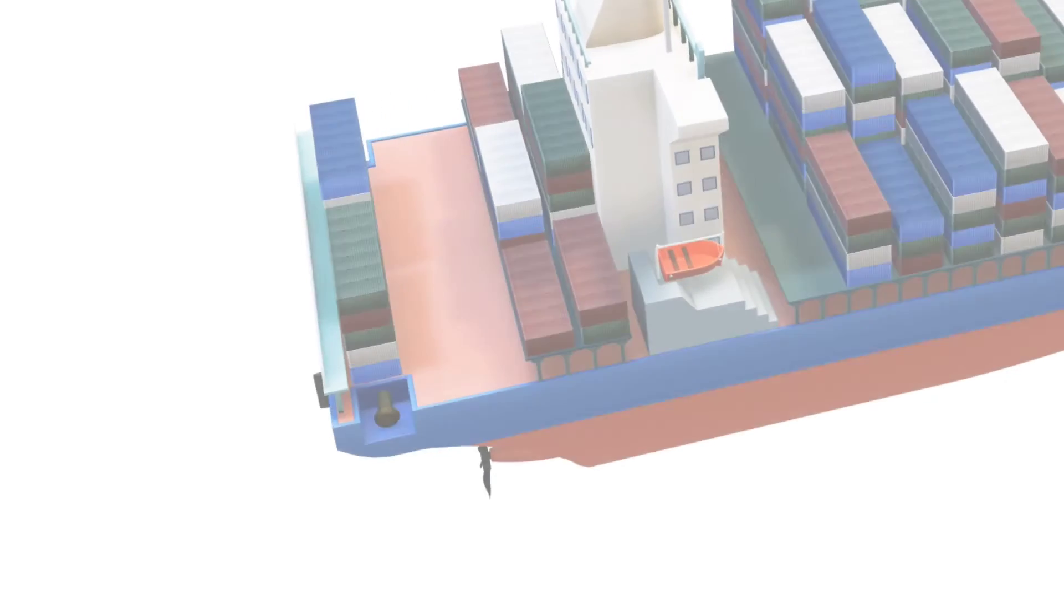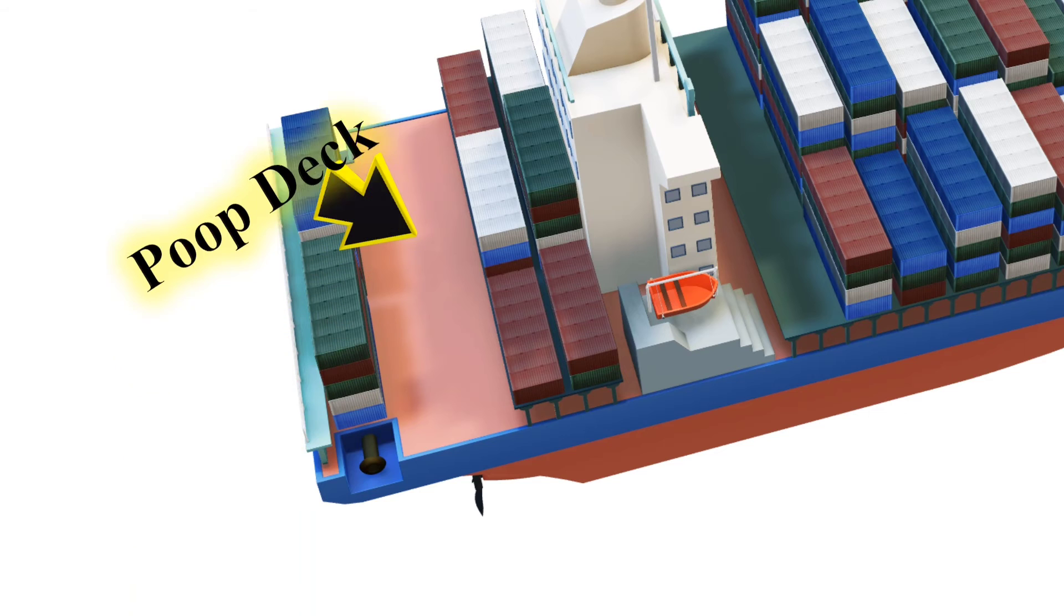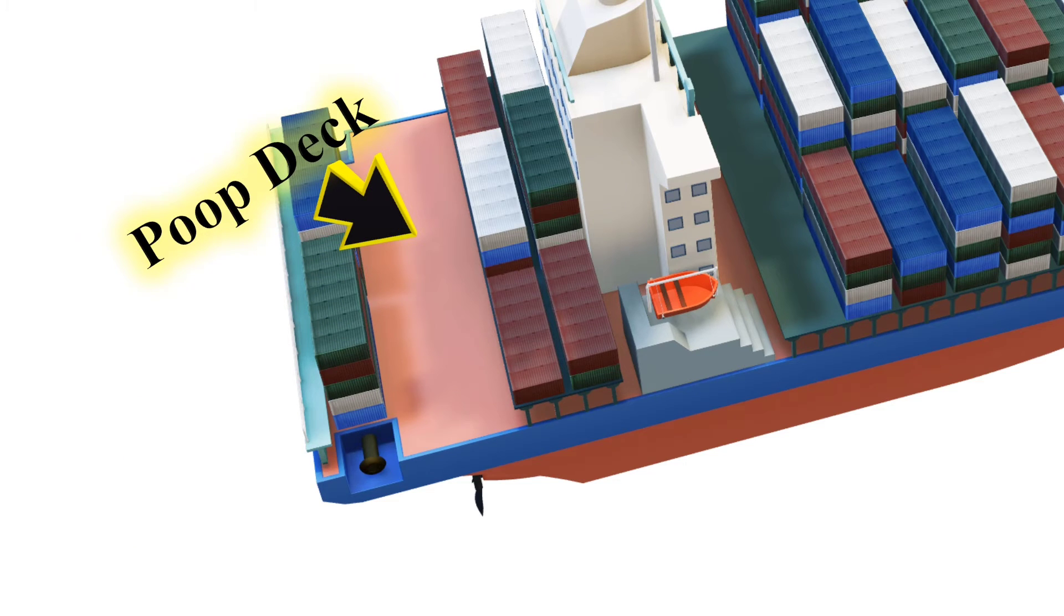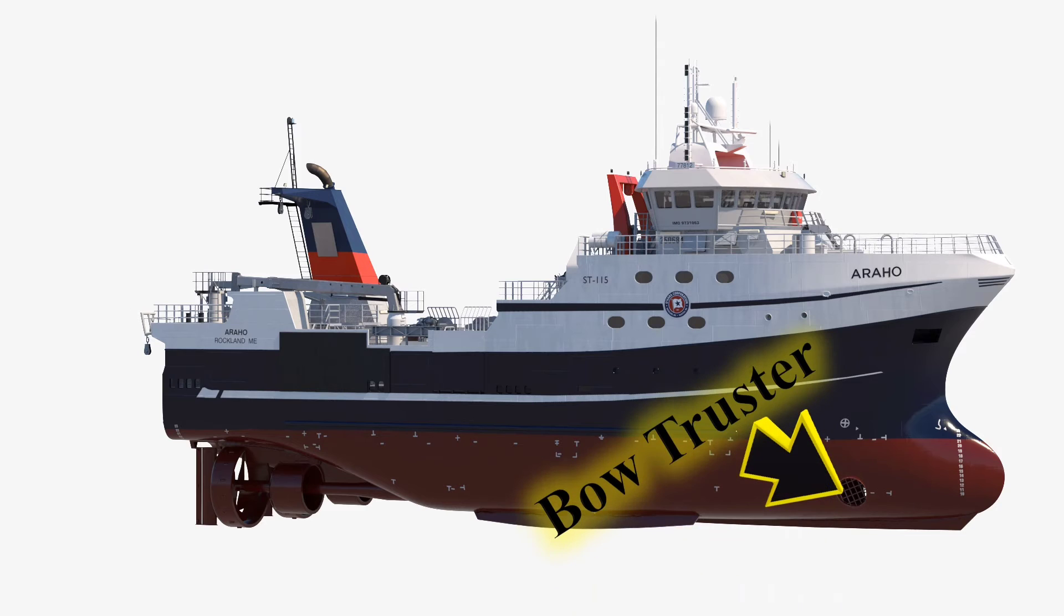Poop deck, an elevated deck at the ship's rear, often used for recreation or observation. Bow thrusters, side-mounted propellers used for maneuvering and controlling the ship's direction.